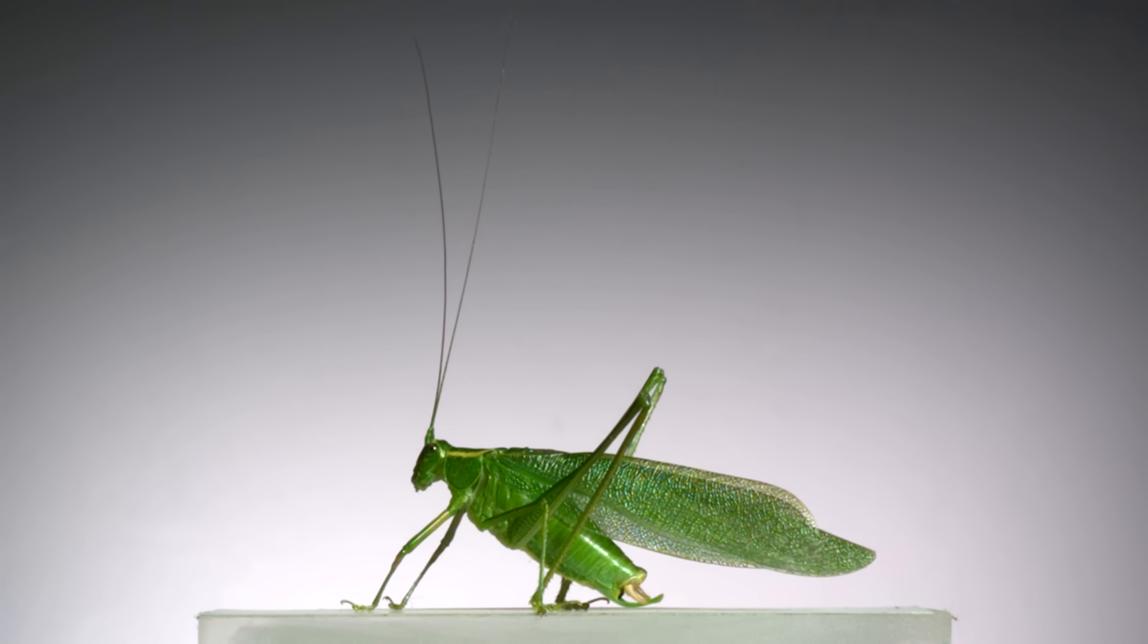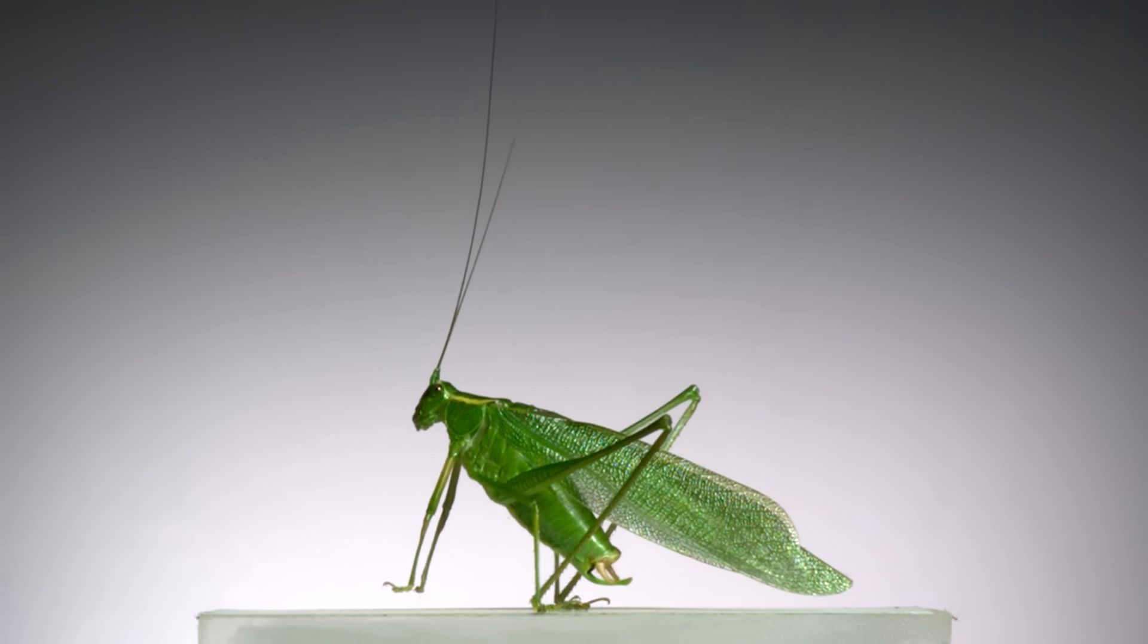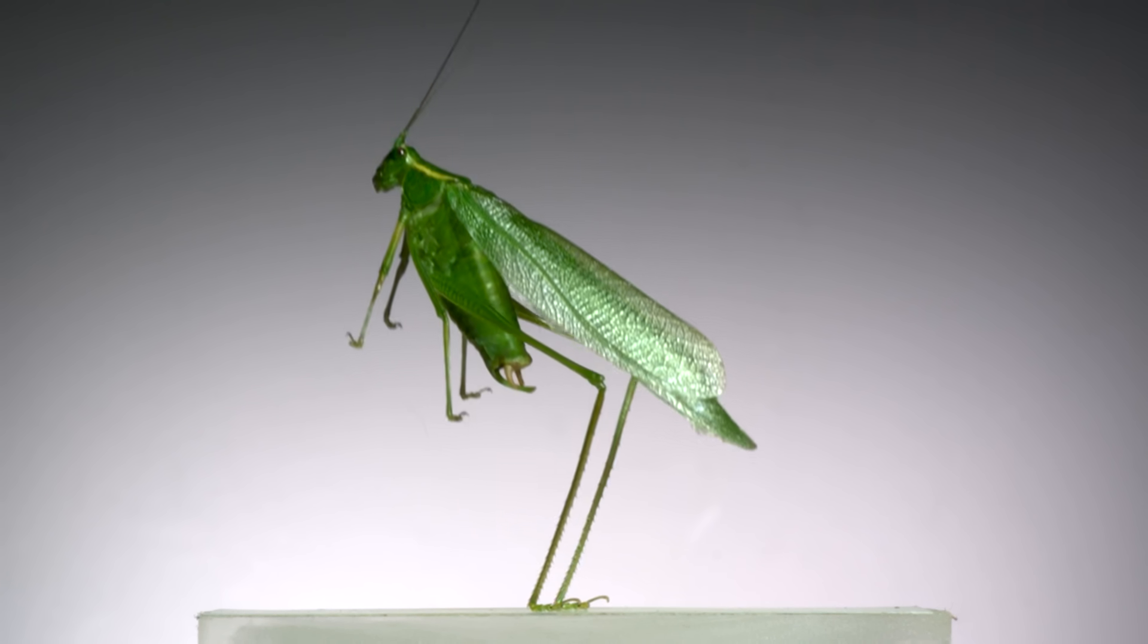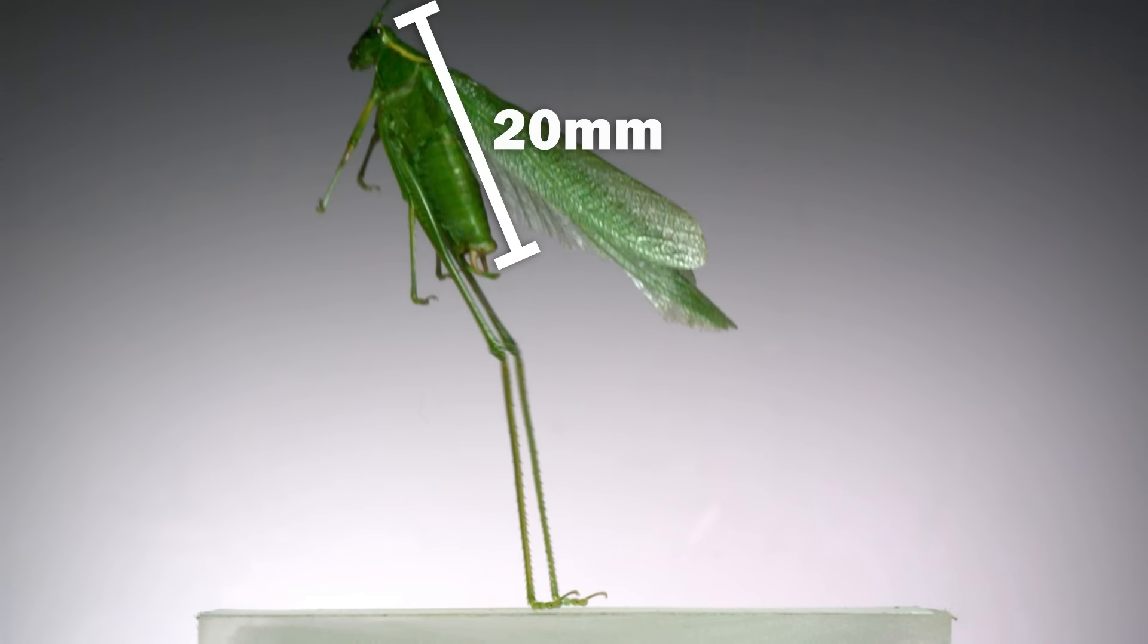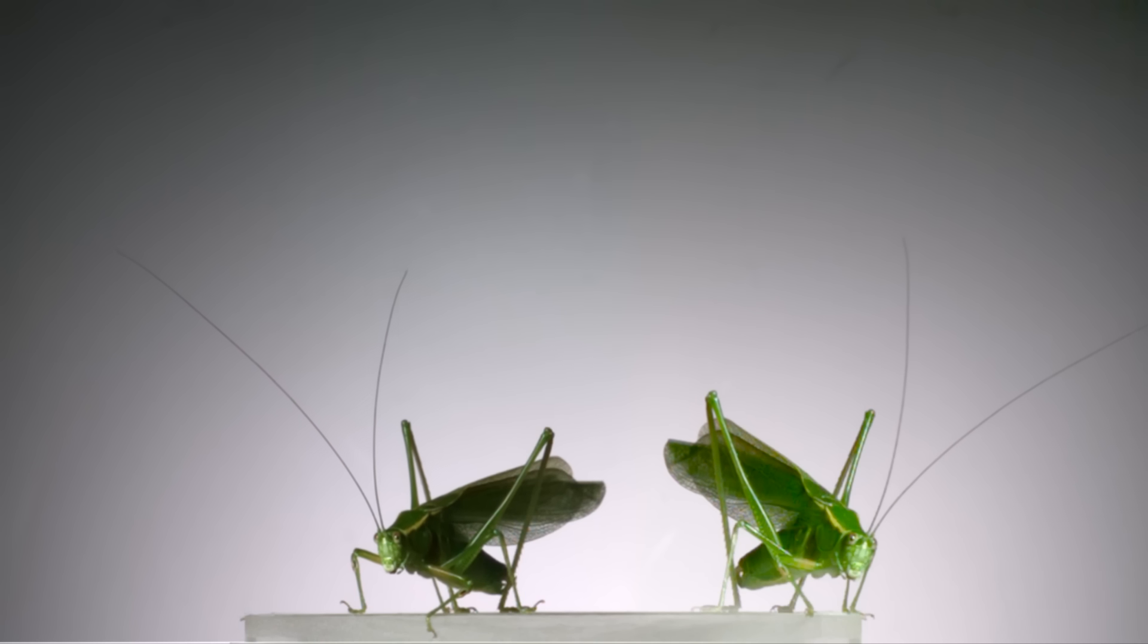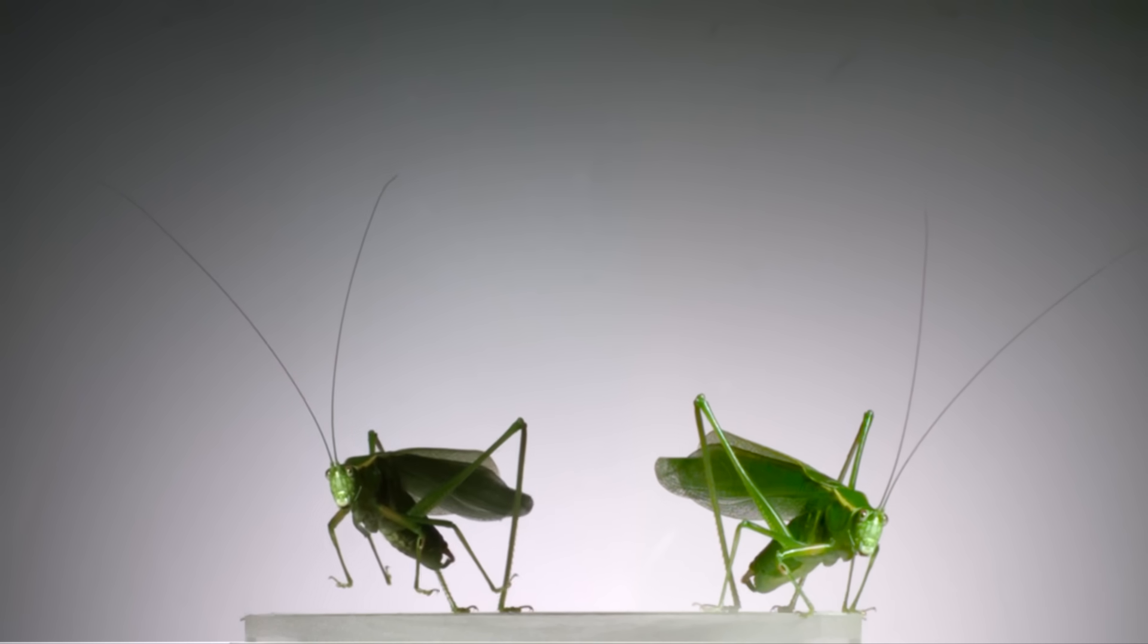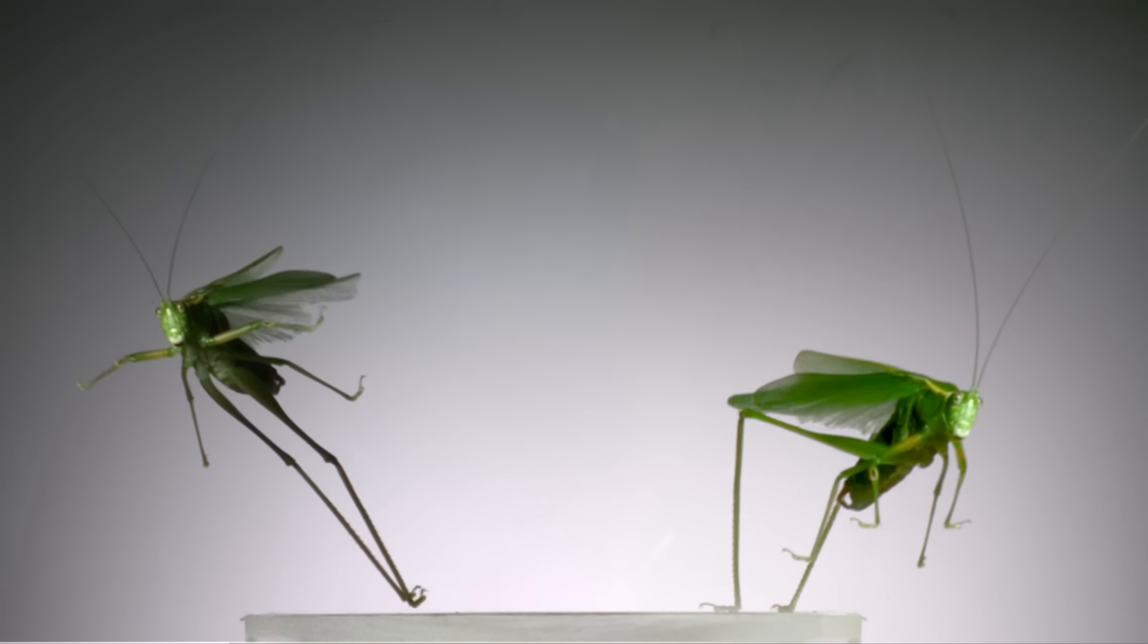This is a species of bush katydid that has comically long hind legs. Head to tail this insect is only 20 millimeters long but the hind legs measure in at 39.4 millimeters. They use their wings more like a sail when they take off. Wing flapping happened but it was off screen only once they were well into the air after jumping.